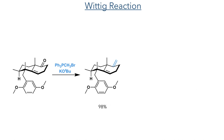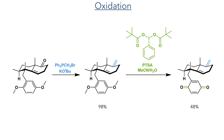Taking this compound forward, another Wittig reaction using triphenylmethylphosphonium bromide was carried out, and this product was then oxidised to convert the dimethoxybenzyl ether into a paraquinone. This was carried out using phenyl iodine dipivolate with PTSA and formed the product in a 48% yield.